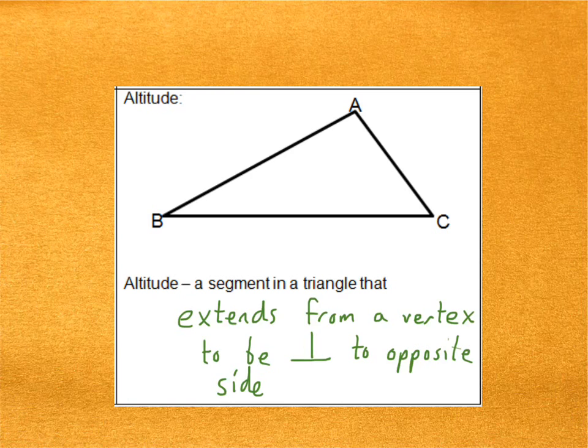An altitude is a segment in a triangle that extends from a vertex to be perpendicular to the opposite side. Drawing the altitude from the vertex A is actually quite easy. Because BC is horizontal, the altitude must be vertical. So therefore, as I'm drawing the altitude, I just need to make it vertical and intersect BC. That's the altitude. If triangle ABC represents our mountain, then the altitude represents the height of the mountain.